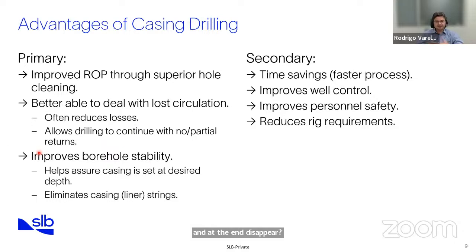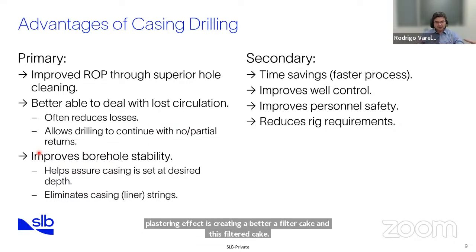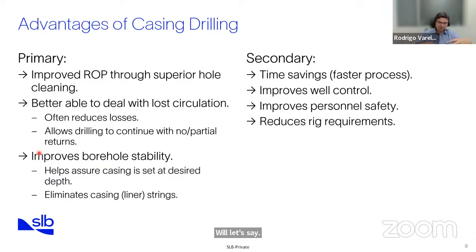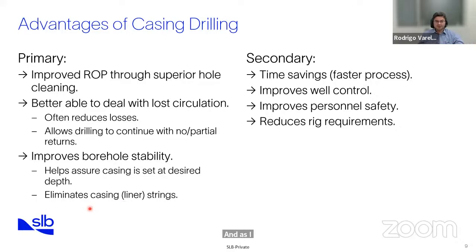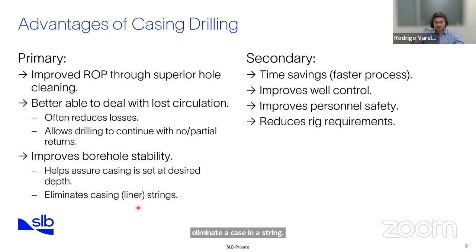The better the filter cake, the less the chances for the hole to collapse. There is also the chance to eliminate a casing string — instead of drilling one section in two runs, we can do only one run and drill to the final total depth.